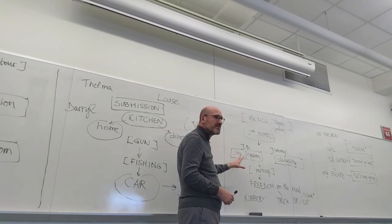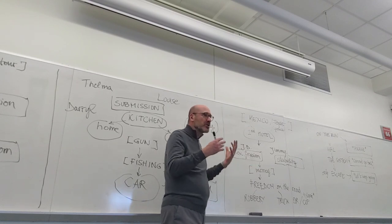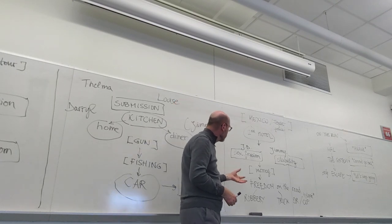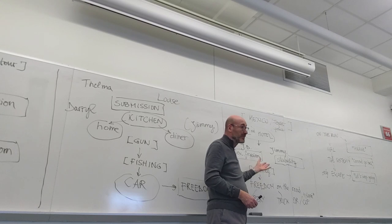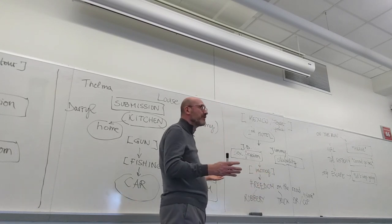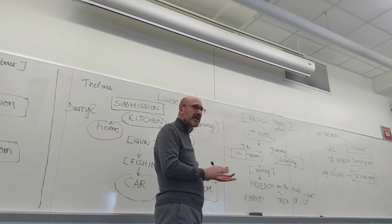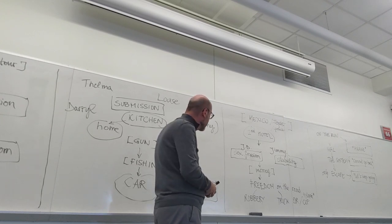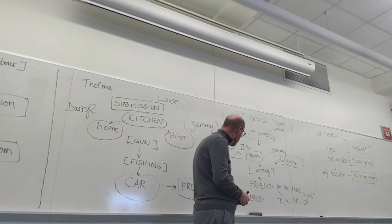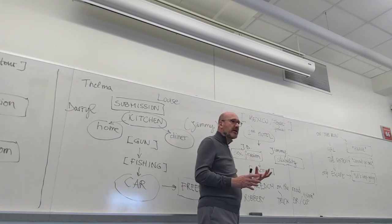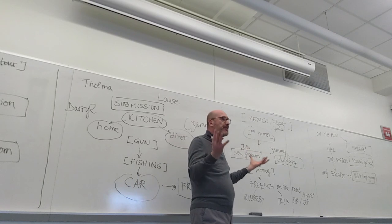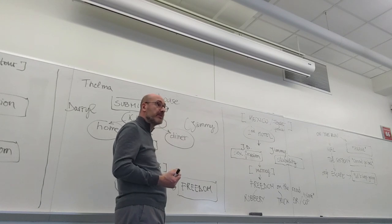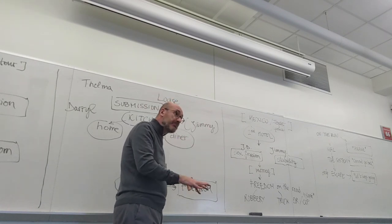Think about Detour and how Al himself doesn't have to pick any hitchhiker. He decides to do that with Vera. And there will be consequences. Same with JD. So yes, JD will spend the night and introduce Thelma to sex, to proper sex. So sexual freedom is one of the themes. At the same time, JD will steal the money, will steal the $6,700. And therefore, at this point, all they have is each other and a car. But they have to be on the run. They have to continue. There is only freedom on the road for them.